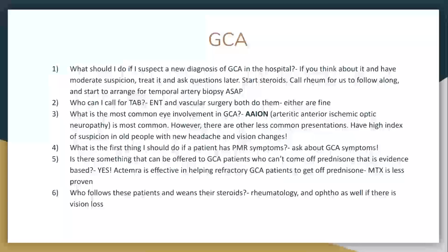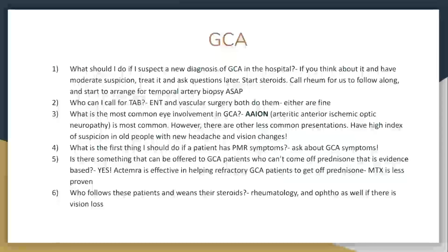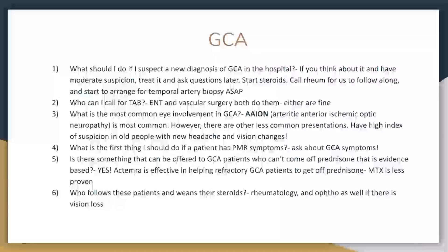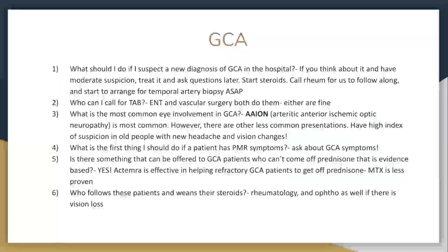People think the temporal artery biopsy is a big deal — sure it's a surgery, but patients tolerate it actually very well. Vascular surgery does them quickly. Sometimes both sides are biopsied. For vision loss, the most common etiology is arteritic anterior ischemic optic neuropathy. There's also non-arteritic which is less associated, but you should think about GCA first. If it's an old person and they have a new headache, especially if there are vision changes, absolutely be thinking about this.